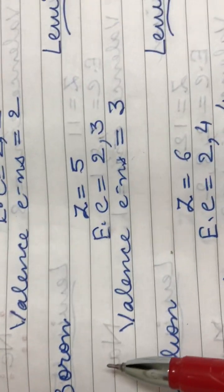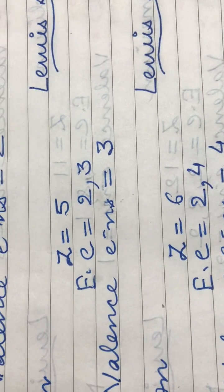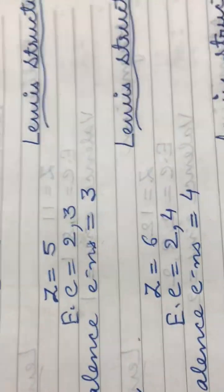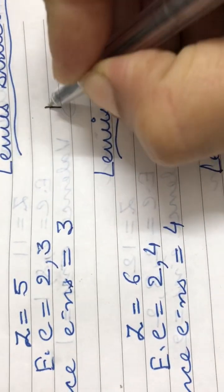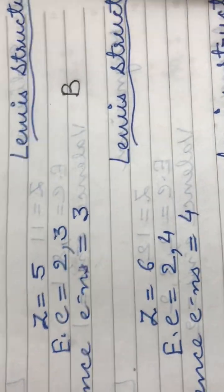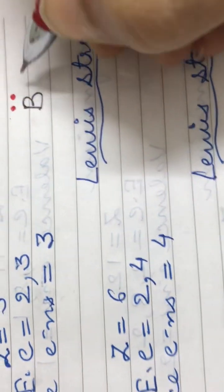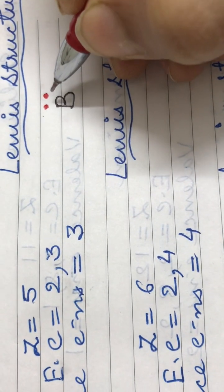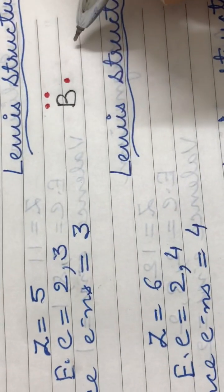Coming to the next element, boron. It has an atomic number of five. Its electronic configuration is 2,3 and it has three valence electrons. The Lewis structure for boron is written as the symbol B with three dots — two dots paired at the top and one on the right-hand side.